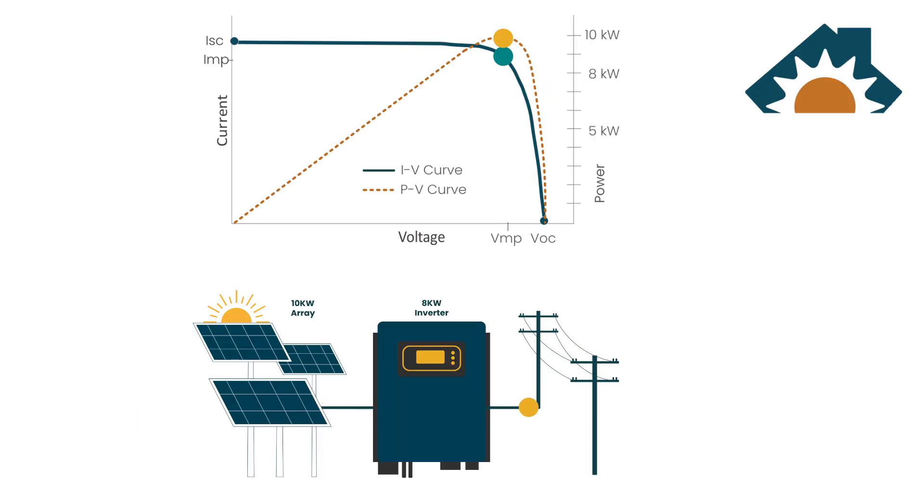So let's say you have a 10 kilowatt array on a bright, cold, sunny day connected to an inverter with MPPT capability. Well, the inverter will move away from the maximum power point voltage, noted as VMP, until the power matches the inverter output. Here you can see the inverter manipulating the voltage higher than the maximum power point until it reaches 8 kilowatts to match the inverter output.